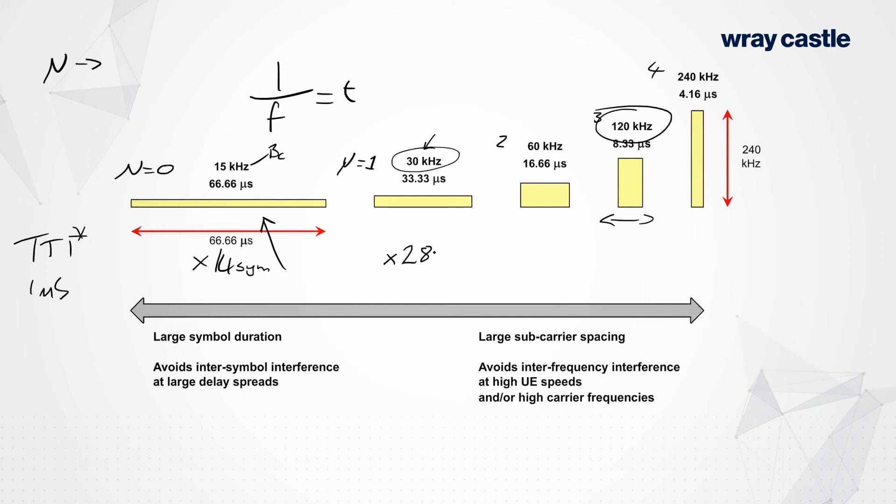The symbol rate is increasing as we increase the numerology for the different 5G options here. And then, of course, we double it again to 56 and then 112 symbols.